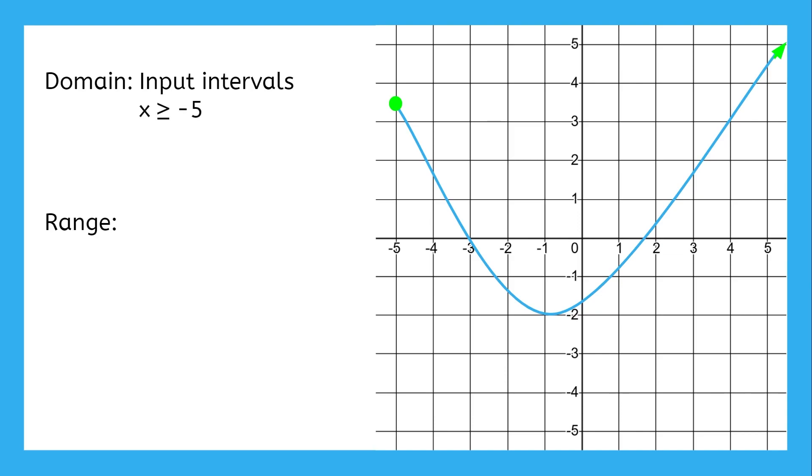We would write this inequality as x greater than or equal to negative five, which just means the inputs can be any value at or to the right of negative five.